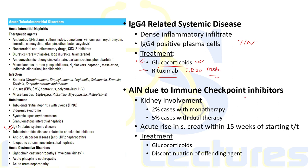With the use of immune checkpoint inhibitors, AIN can develop, seen in approximately 2% of cases with monotherapy and 5% with dual therapy. Typically, there is an acute rise in serum creatinine within 15 weeks of starting treatment. Management involves discontinuing the offending agent and administering glucocorticoids.